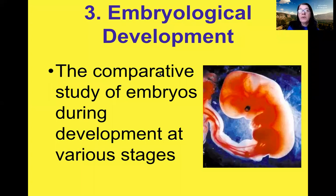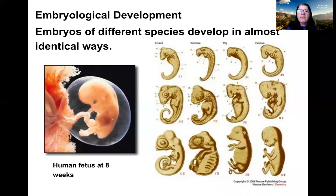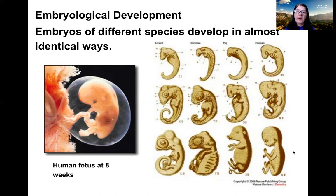Embryological development is another evidence for evolution. When you compare how animals develop, you see that in the very early stages of embryonic development the embryos look the same — you can't tell a human from a pig, a turtle, or a lizard. Only during later stages of development can you see distinctiveness in the shape and form of the developing embryo. This is evidence that many animals develop in a very similar way, especially early in development.